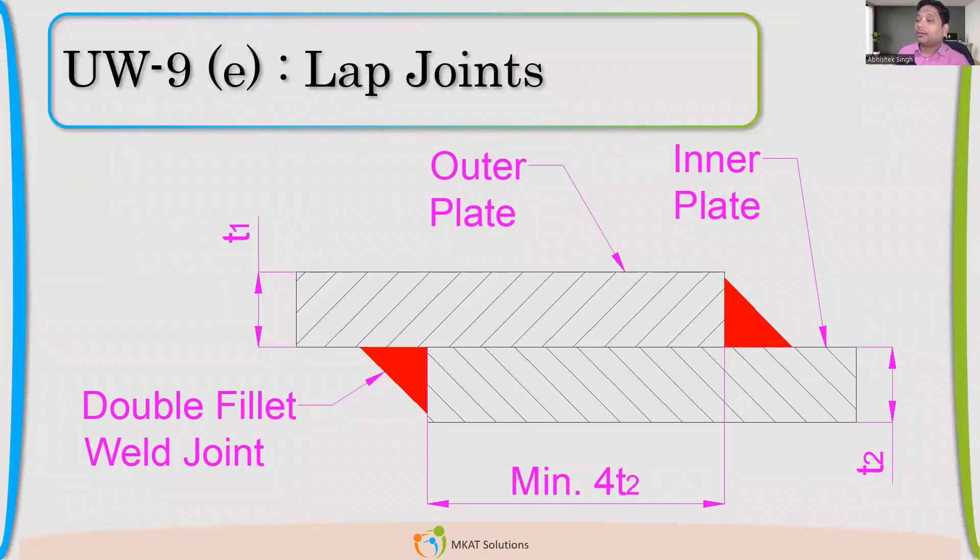Akash and Nikhil, if you remember, it is possible. It is permitted. We can have lap joints. But it is applicable only for, generally, we use for very low, low pressures. Otherwise, we'll talk about the limitation when we talk about UW-12.